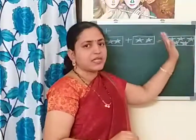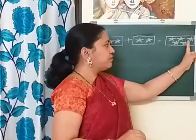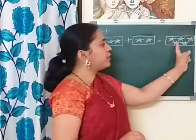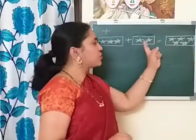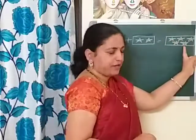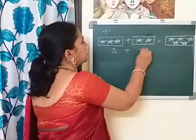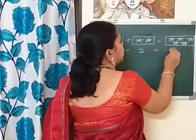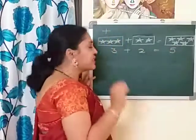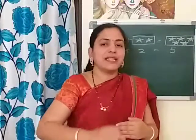Now we will count the stars together: one, two, three — which is in the first box — and one, two — which is in the second box. Together it is one, two, three, four, and five. So we can see that three plus two is equal to five.